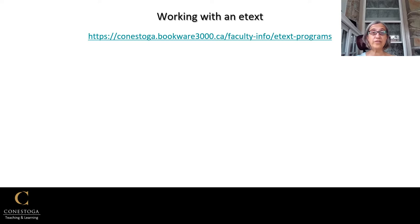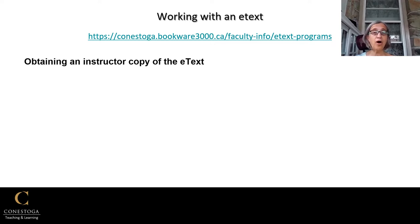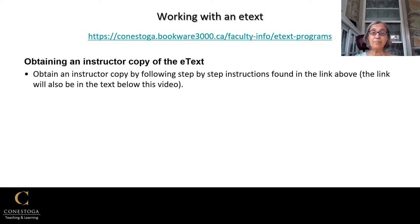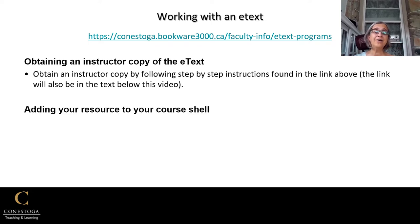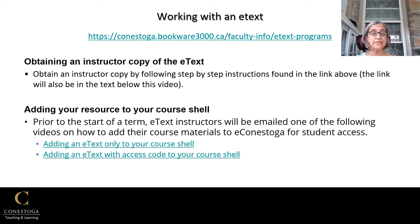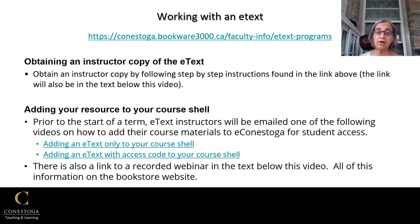Let's talk about working with an e-text. This is the link to the bookstore information on the subject. To obtain your instructor copy of the e-text, follow the step-by-step instructions found in the link above, which will also be posted in the text below the video. To add the e-text link to your course shell so that all students will have access, prior to the start of the term, e-text instructors will be emailed one of the following videos on how to add their course materials to eConestoga. There's also a link to a recorded webinar in the text below this video, and all of this information is available on the bookstore website.